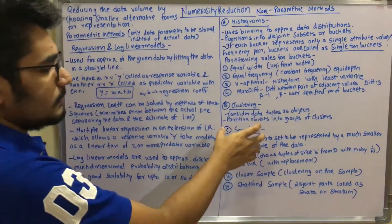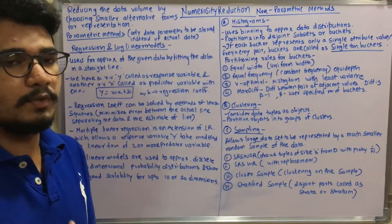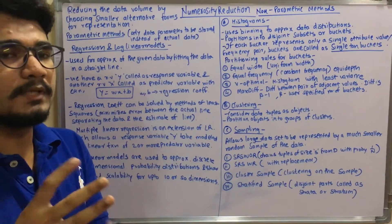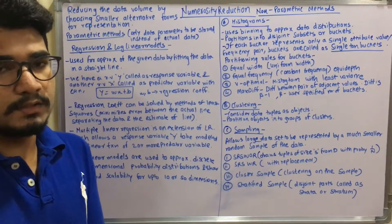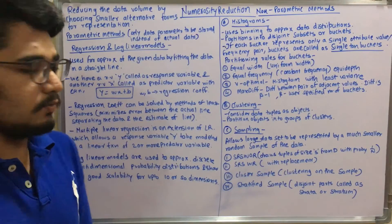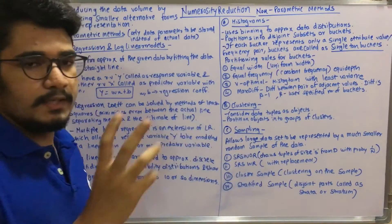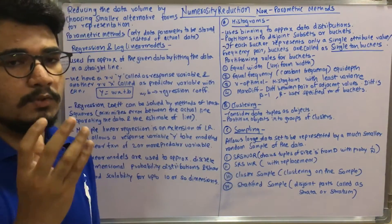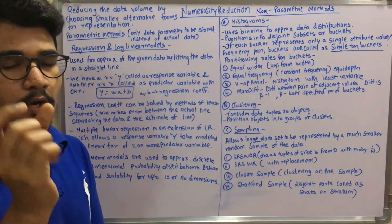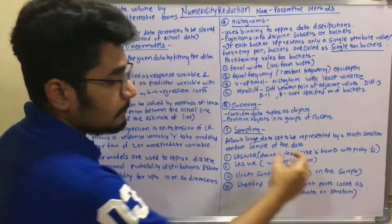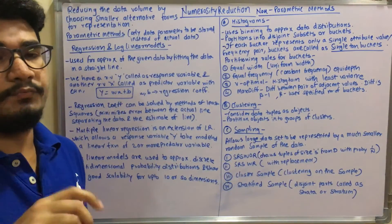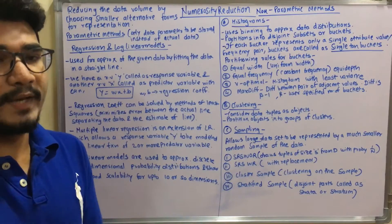Then you have clustering sample. So what do you do in this? You basically sample those particular input data. Then on that you apply some clustering methods, some clustering algorithms, agglomerative clustering and all those things. Then you have stratified sample. So in this what it considers, it disjoints the particular data parts into small objects which is called stratum or strata, and then it tries to fit into that particular non-parametric model.